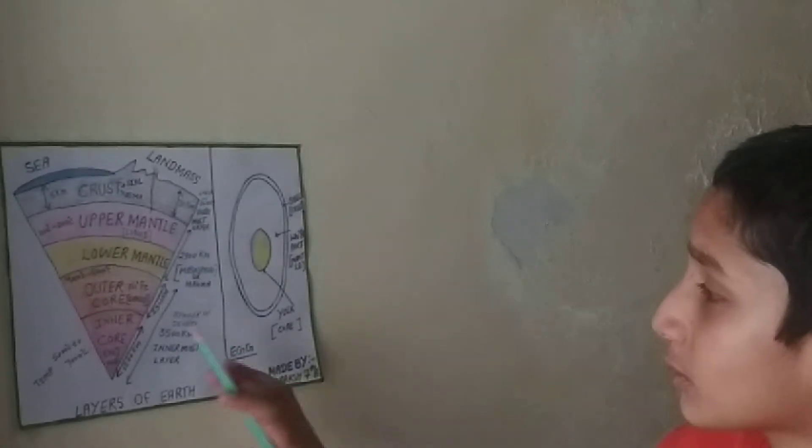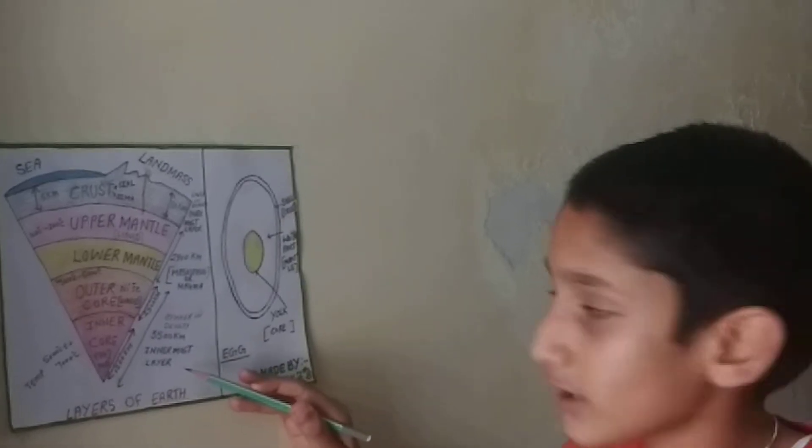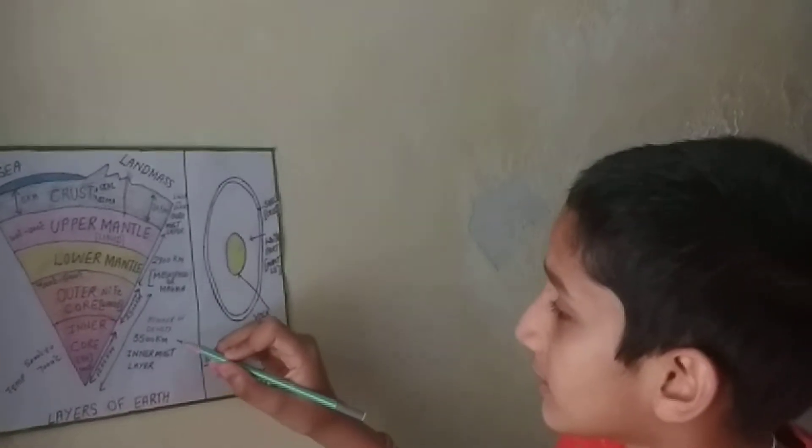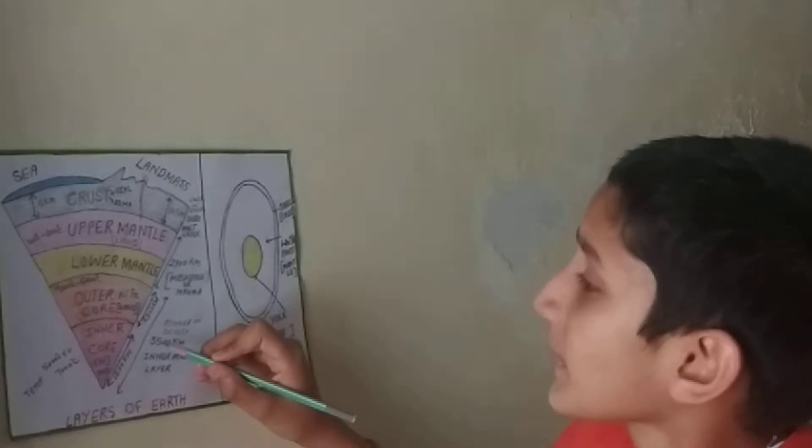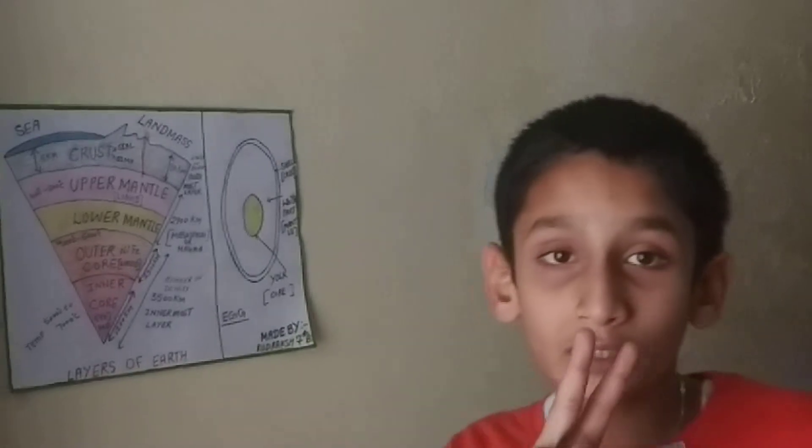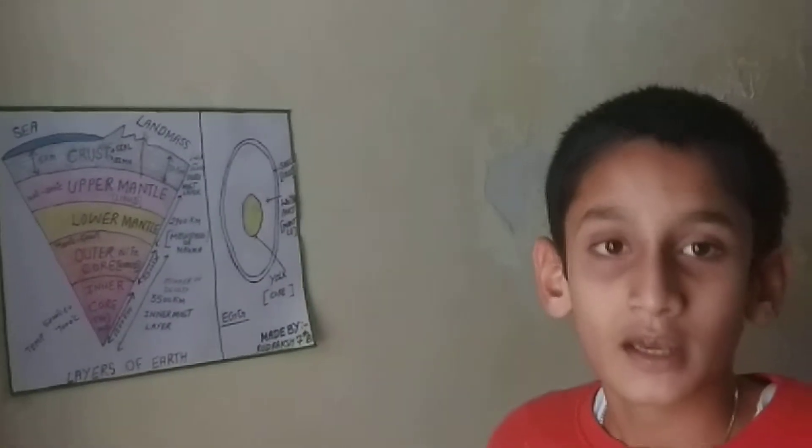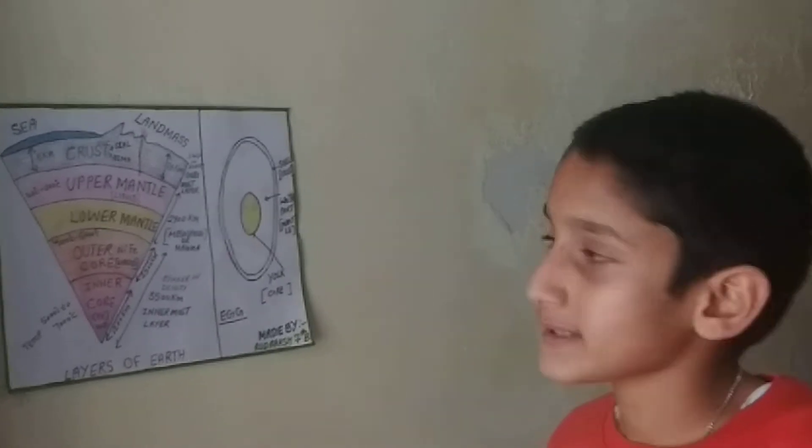The next layer is the core. It is the innermost layer of the earth, higher in density, with a thickness of 3500 km. It is made up of two metals: nickel and ferrous. Ferrous is also known as iron.